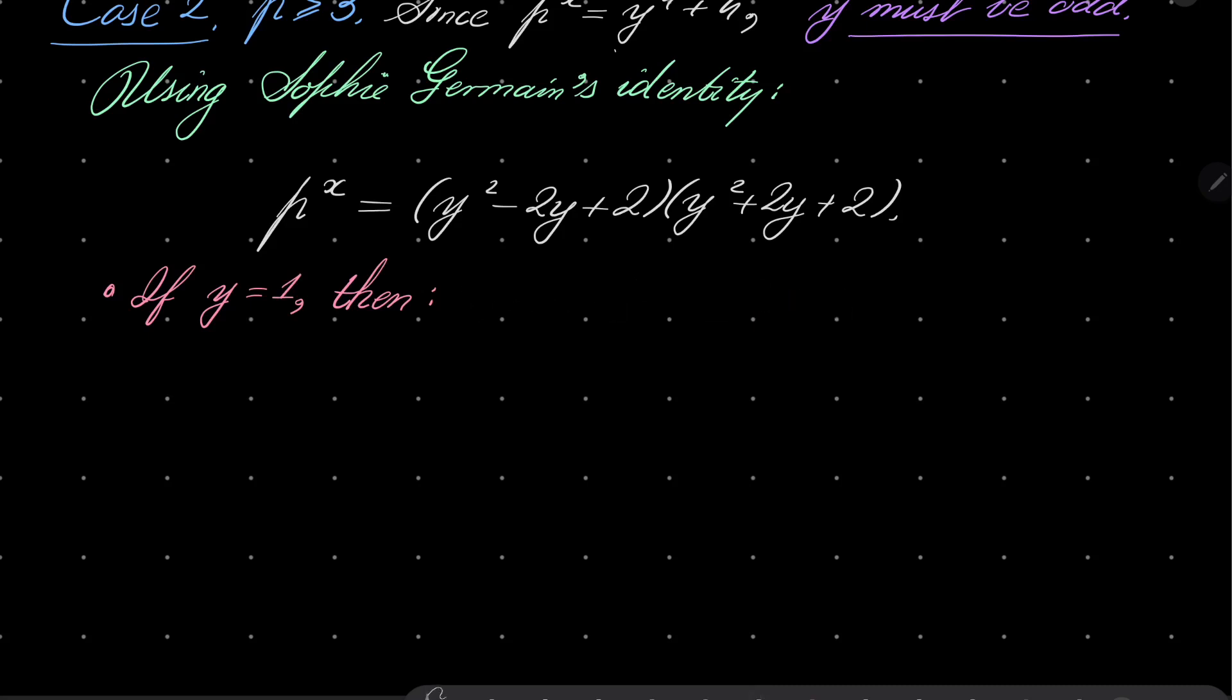If y equals 1, then p^x = 5, which has only one pair of solutions namely p must be equal 5 and x must be equal 1.